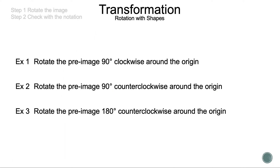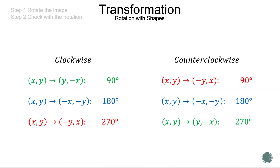Here are the examples we're going to be discussing in today's video. We have two types of rotation: clockwise and counterclockwise. If we're asked to rotate an image 90 degrees clockwise, the point XY becomes Y negative X. If we're asked to rotate an image 180 degrees clockwise, the point XY becomes negative X negative Y.